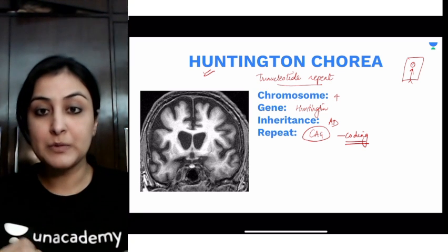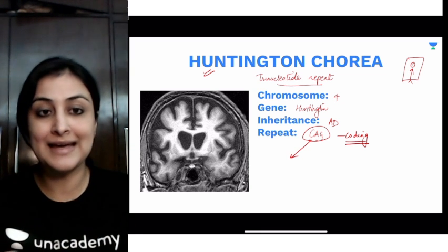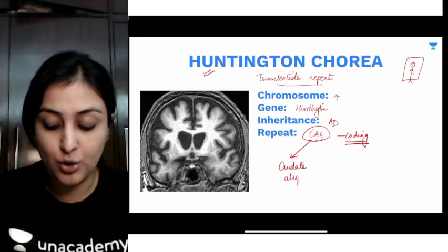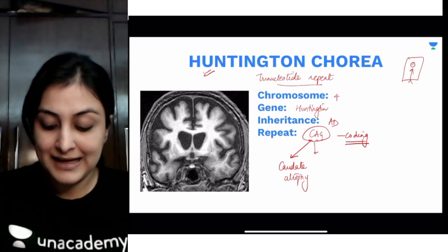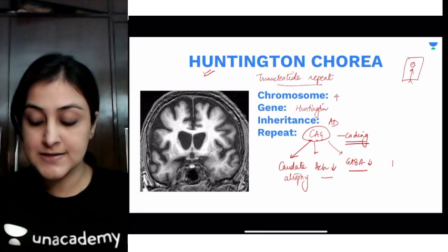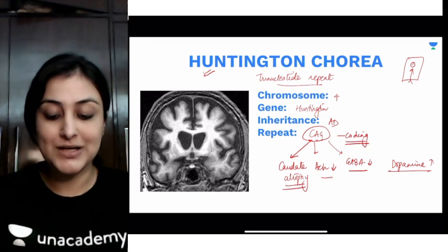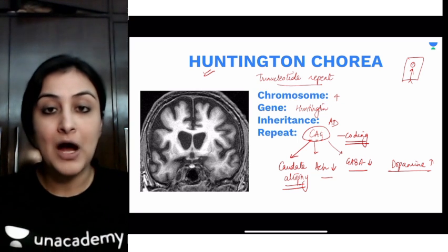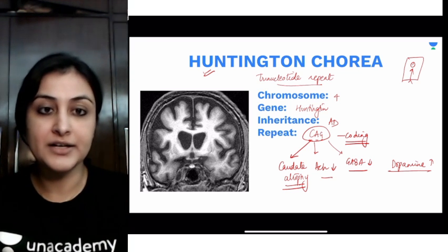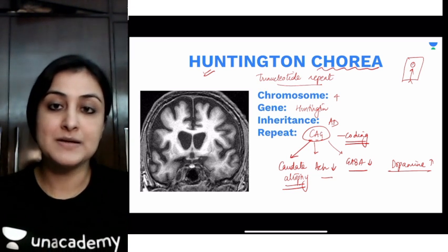From the CAG repeat mnemonic, C, A, and G all go down — they undergo atrophy or lower levels. So we see atrophy of the caudate. Acetylcholine levels go down. GABA levels go down. What increases is dopamine. This helps us remember all the neurotransmitter changes. Patients present most importantly with dementia, emotional disturbance, and — as the name suggests — typical choreiform movements which are progressive in nature.